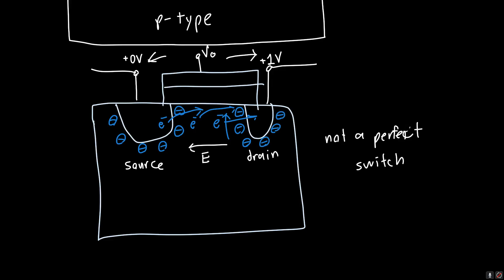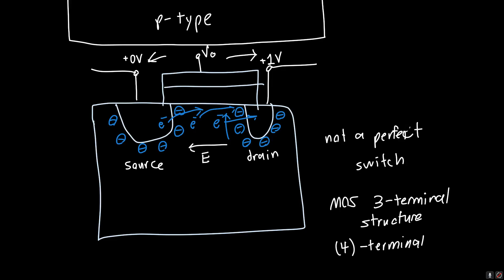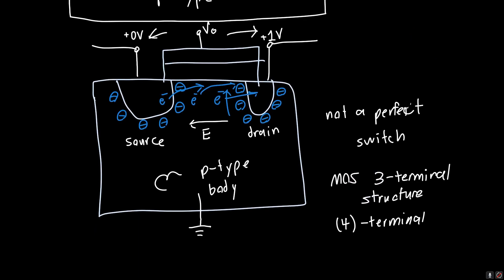This is the MOS three terminal structure — or sometimes you'll hear it called a four terminal structure — because we do have a fourth terminal: the body. So what is this p-type semiconductor bulk connected to? Typically for an NMOS transistor like this, with a p-type body, we connect the body to ground, because that means we don't have to worry about hardly anything at all.